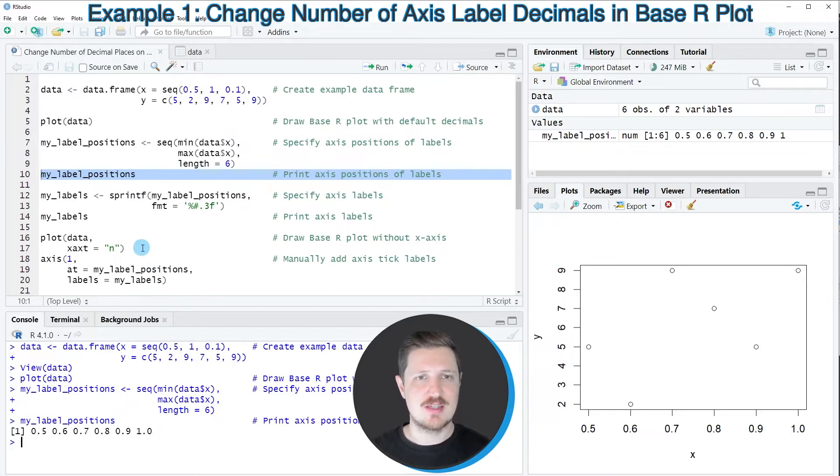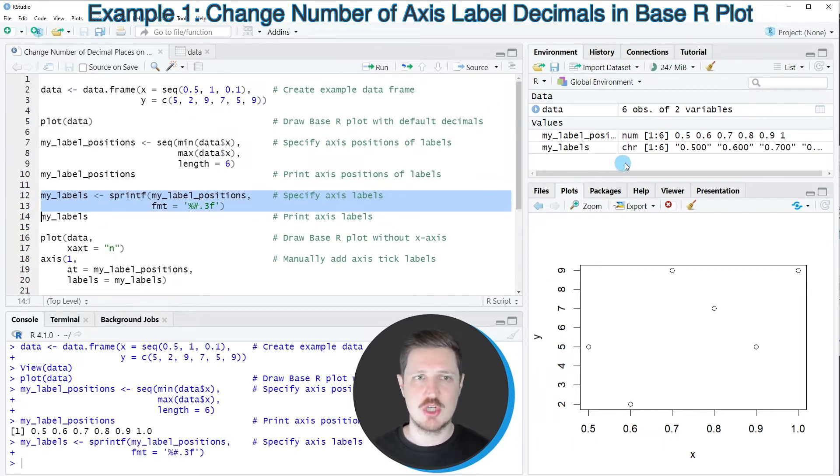And then in the next step, we need to apply the sprintf function to specify the actual axis labels that we want to show. So after running lines 12 to 13 of the code, this data object, my_labels, is appearing at the top right as well.